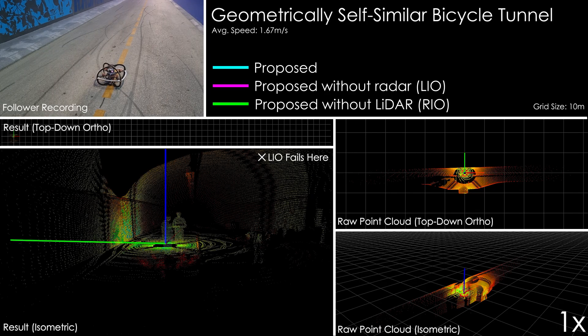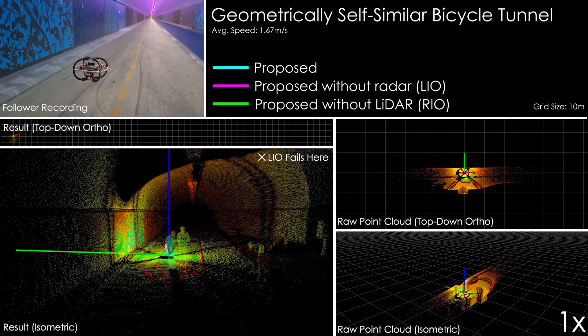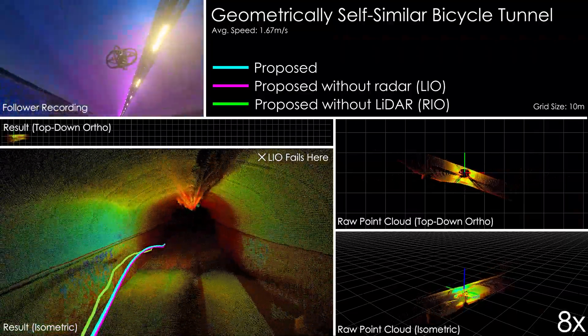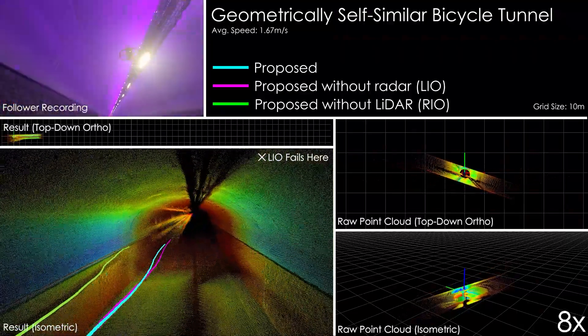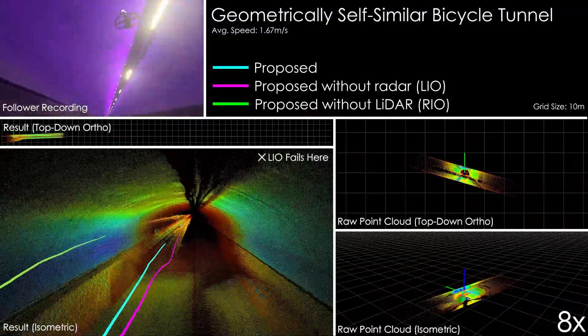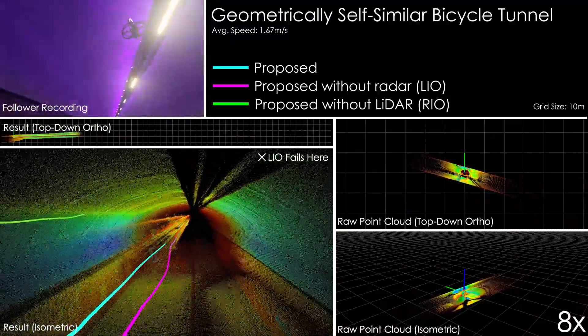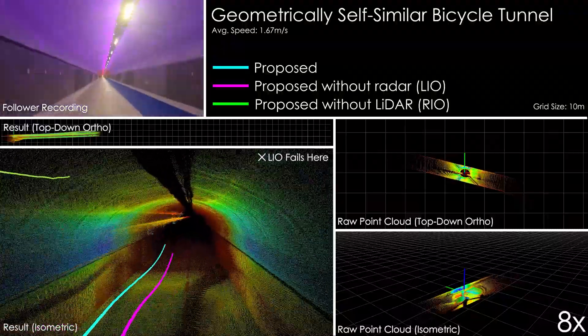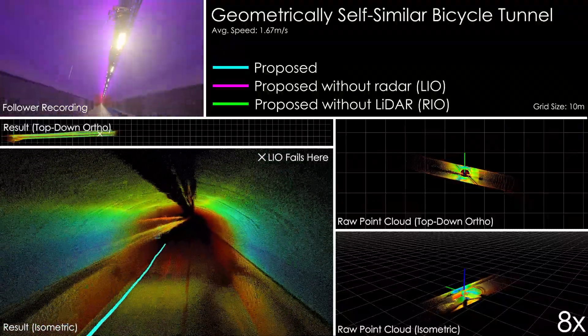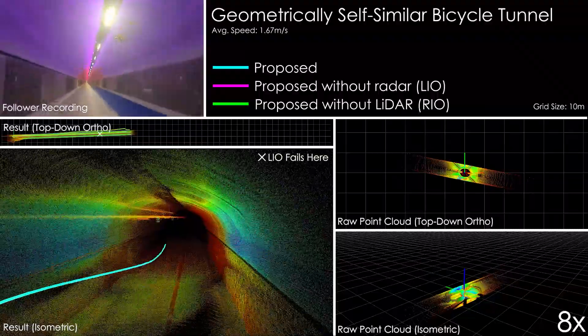The bicycle tunnel presents a geometrically self-similar environment within a few meters from the takeoff location of the robot. Due to this, there exist no features informing the estimator along the direction of the tunnel. Note that here LiO refers to the proposed method without any radar-derived factors, and RIO refers to the proposed method without any LiDAR-derived factors.